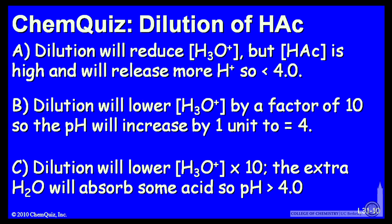Or B: dilution will lower the H3O+ by a factor of 10, so the pH will increase by one unit to 4.